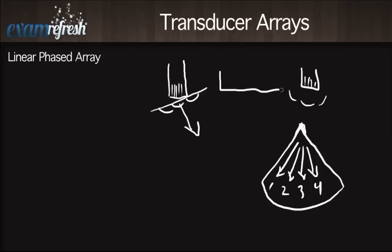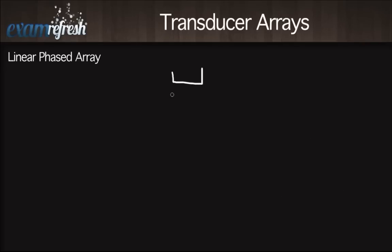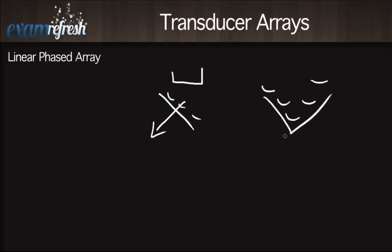The benefit of the linear phased array is its very small footprint, making it easy to get into small spaces — for example, imaging the neck of a baby where a four-centimeter linear transducer wouldn't fit. The phasing also allows the beam to be steered and focused. This was one of the first applications of the phased array: the ability to focus the beam and manually select the focal zone, compared to older fixed-focus transducers where you just hoped the target fell in the focal area.